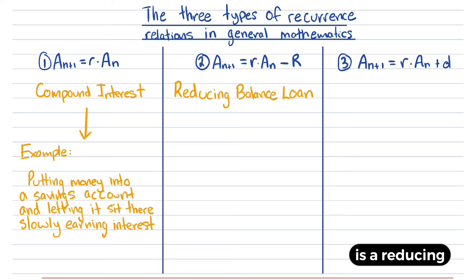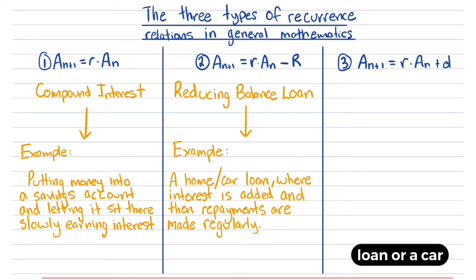The second type is a reducing balance loan. These come up fairly often, probably the most often out of all three recurrence relations from my experience. A reducing balance loan is an example of paying off a loan—it could be a home loan or a car loan where interest is added onto the total amount and then repayments are made regularly.